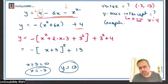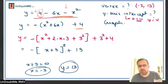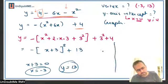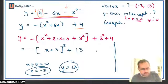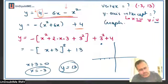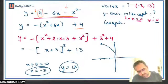Then for the y-axis intercept, put x equals 0 — I get y equals 4. Then I graph it. The coefficient of x squared is negative, so this is going to be a downward parabola. A downward parabola with vertex negative 3 comma 13 — negative 3 and 13 will be somewhere over here. The y-axis intercept is 4, so it will cut the y-axis at 4.